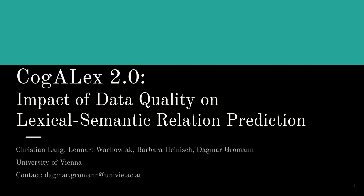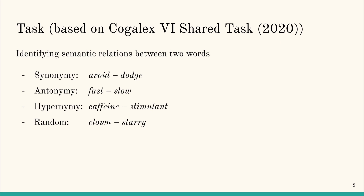Hi, I'm Christian Lang and today I would like to present our paper COGALAX 2.0: Impact of Data Quality on Lexical Semantic Relation Prediction. The task is the following: given a pair of terms, identify the relation between these terms as either synonymous, antonymous, hyper- or hyponymous, or unrelated.